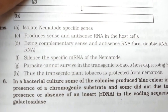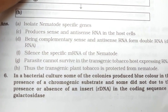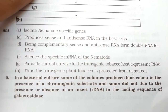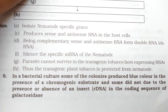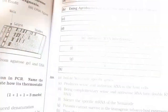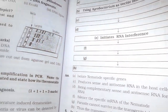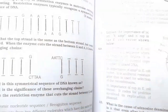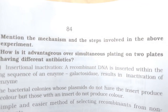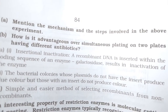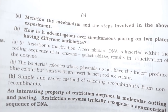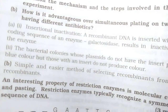In a bacterial culture, some colonies produced blue color in the presence of a chromogenic substrate and some did not, due to presence or absence of an insert — recombinant DNA — in the coding sequence. The question asks: mention the mechanism and steps involved in the experiment, and how it is advantageous. Check the answer.